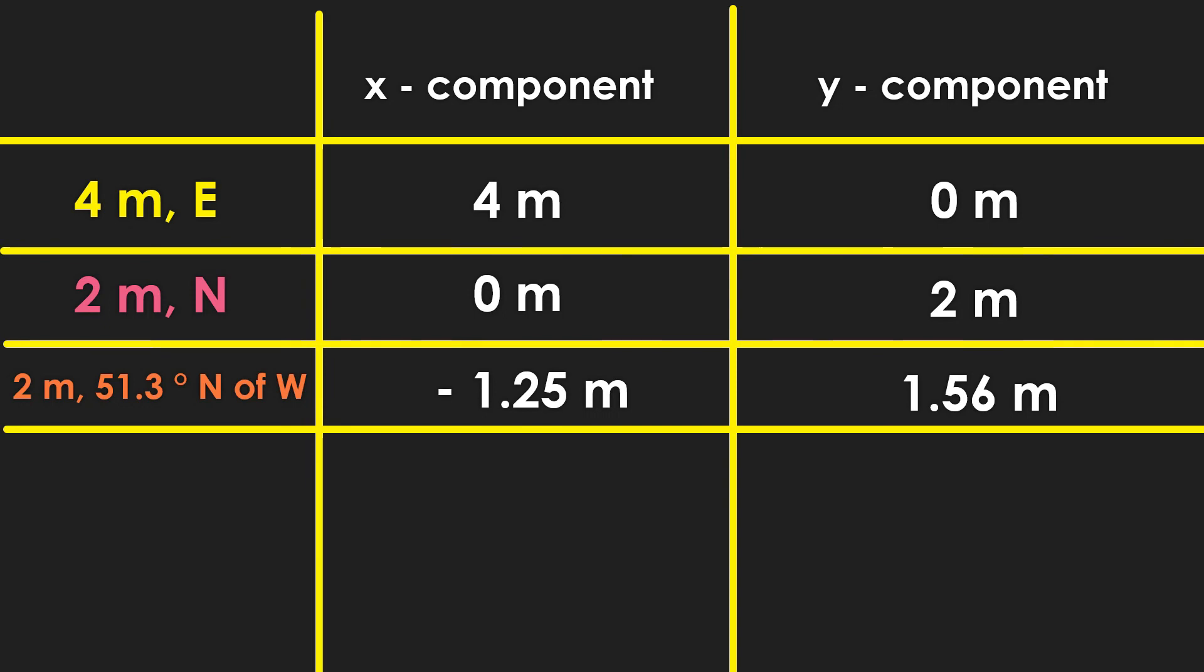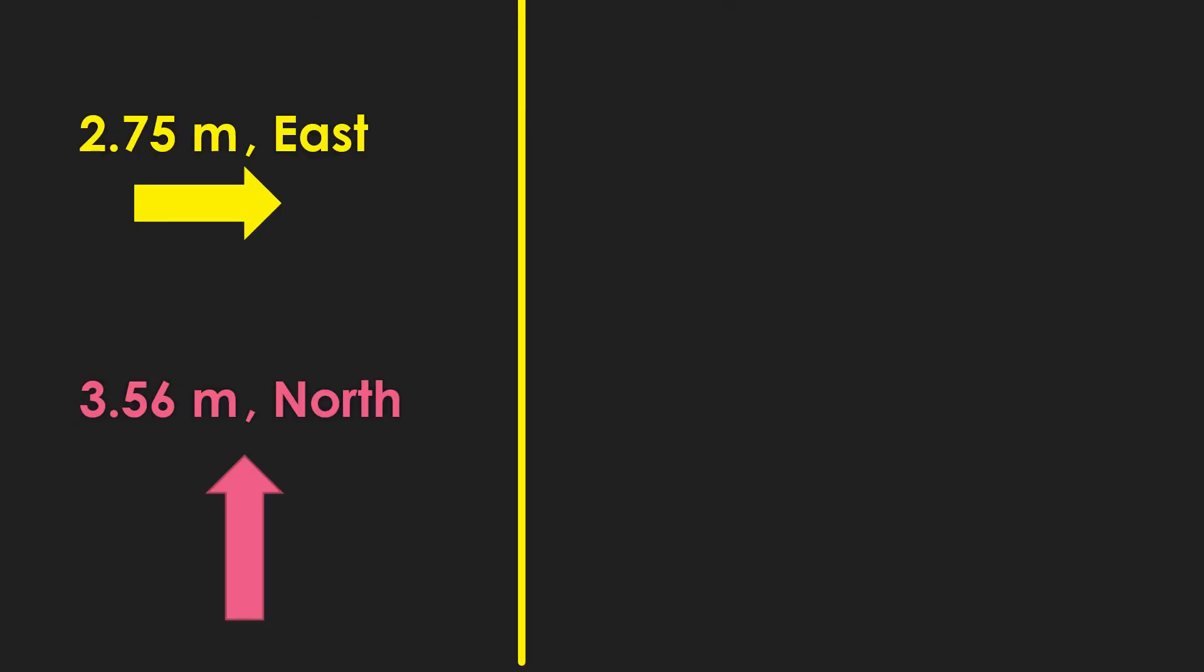Our next step is to get the sum for the x and y components. Their sum will represent the components for our resultant vector. So we have 2.75 meters for the x component of the resultant vectors, and 3.36 meters for the y component of the resultant vector.